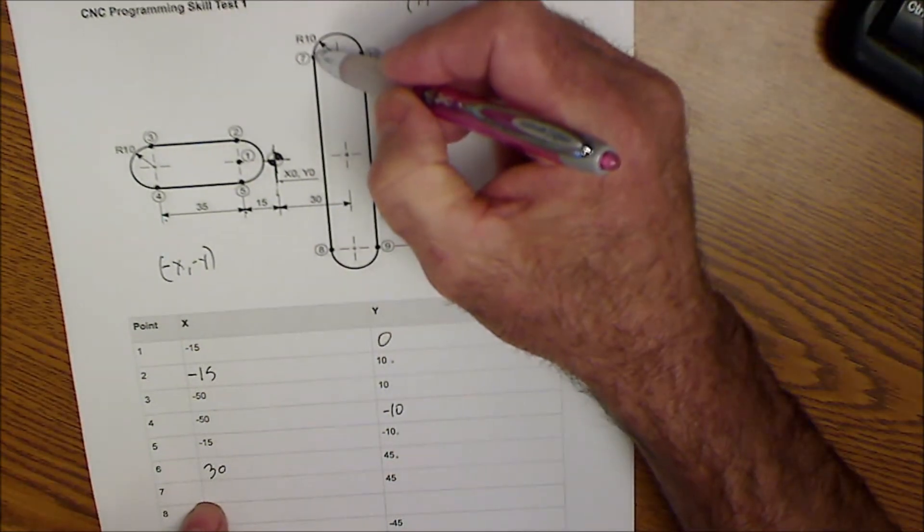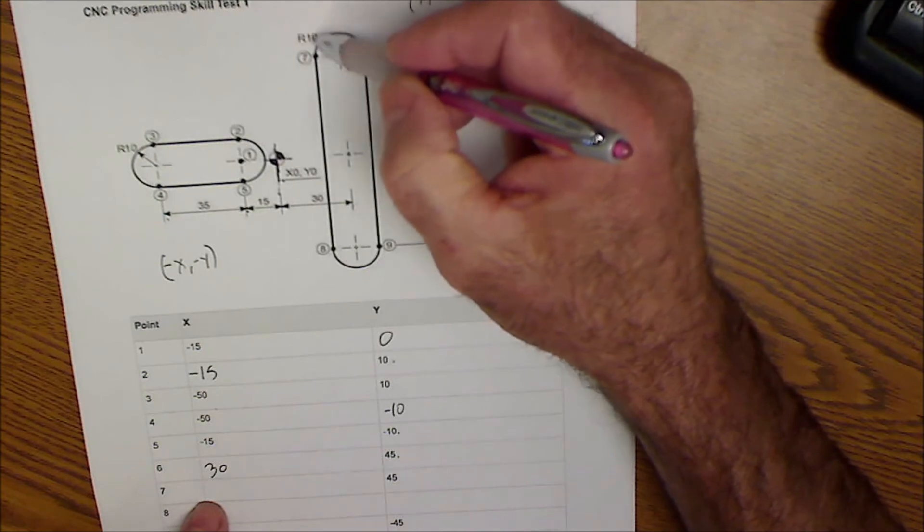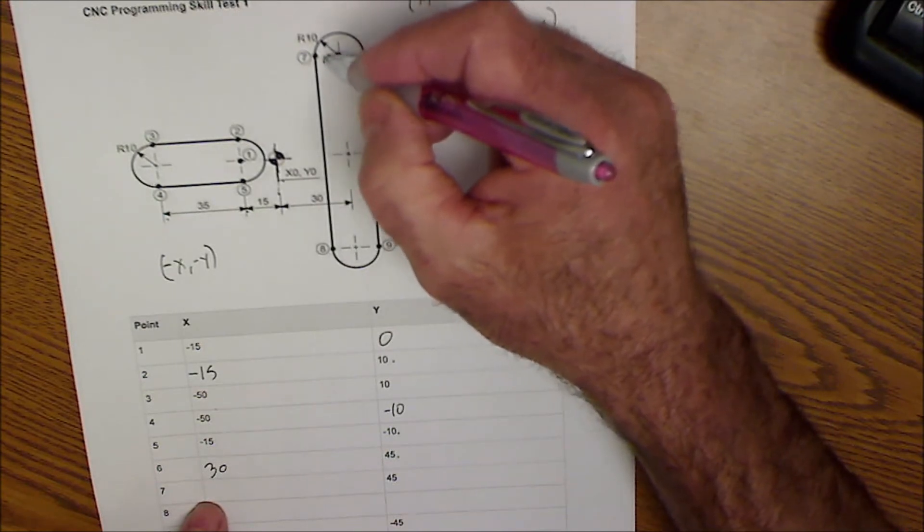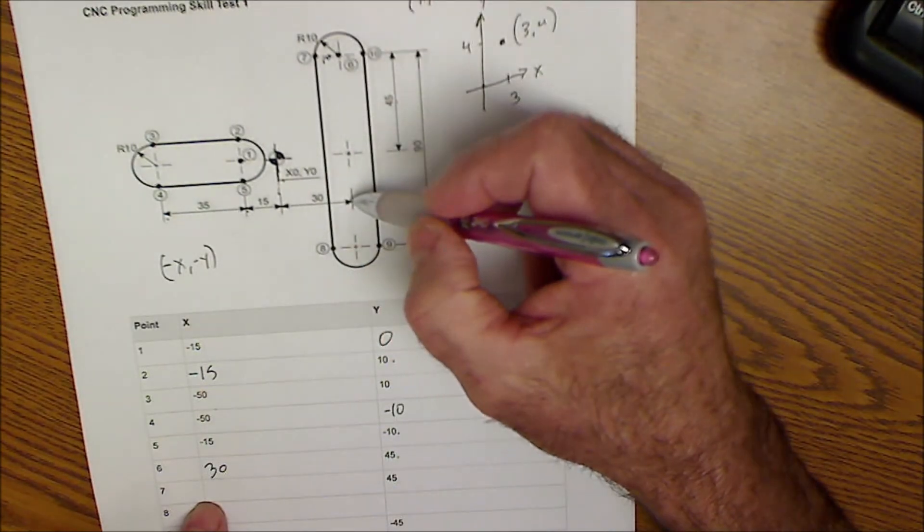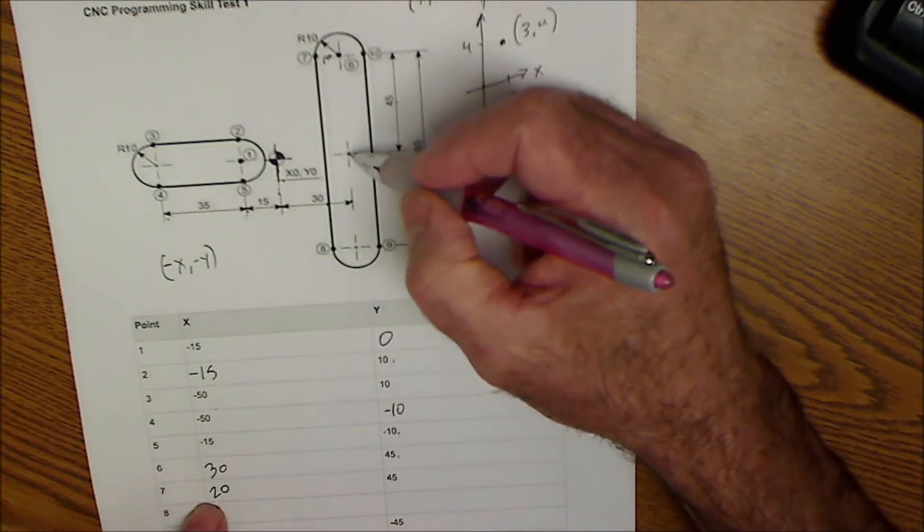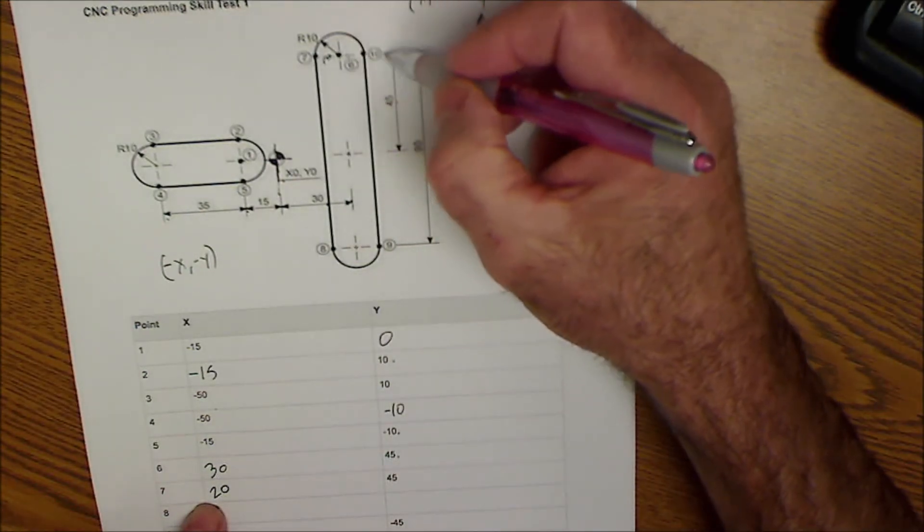Point number seven is a radius of 10 - that's what that capital R is - so this is 10 here as well. I go over 30 but I come back that 10, so this is over 20 and it is up 45.